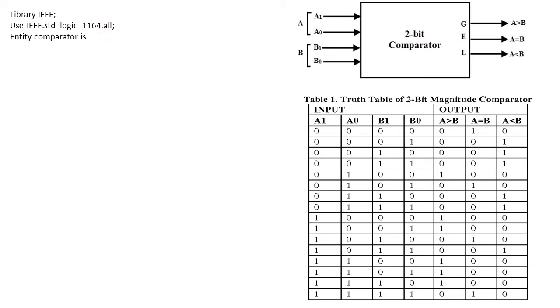Now we define the entity as comparator. We have two input terms: A and B, which are input standard logic vectors whose length is 1 down to 0, so it will fetch a1, a0, b1, b0. There are three outputs: equal, greater, and less. We end the entity.